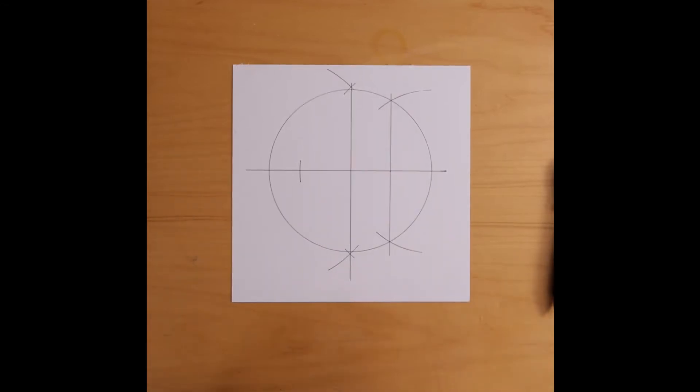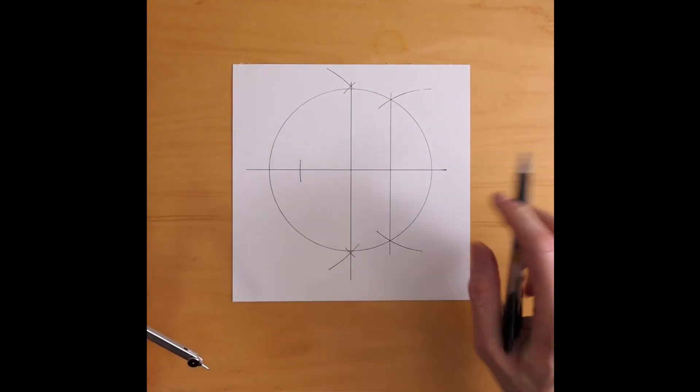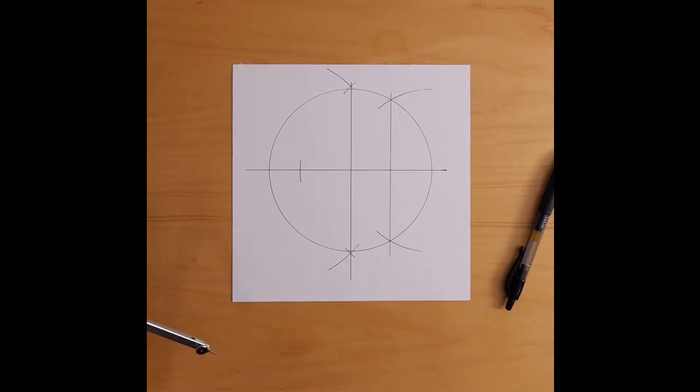What good is that mark? Well, it turns out that that mark has a really nice length. The line from the top of the circle to this point turns out to be the right length for an edge of a pentagon that fits in this circle.